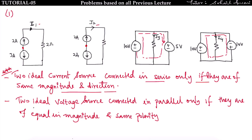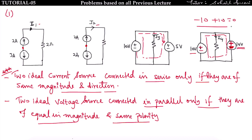Similarly, two ideal voltage sources connected in parallel are only valid if they are of equal magnitude and same polarity. For example, with both sources at 10 volts and same polarity, minus 10 plus 10 equals 0, so KVL is satisfied. Likewise, two ideal current sources in series are valid only if of same magnitude and direction — if the 2-ampere source direction is changed to match, i2 will be 2 amperes because KCL is satisfied.